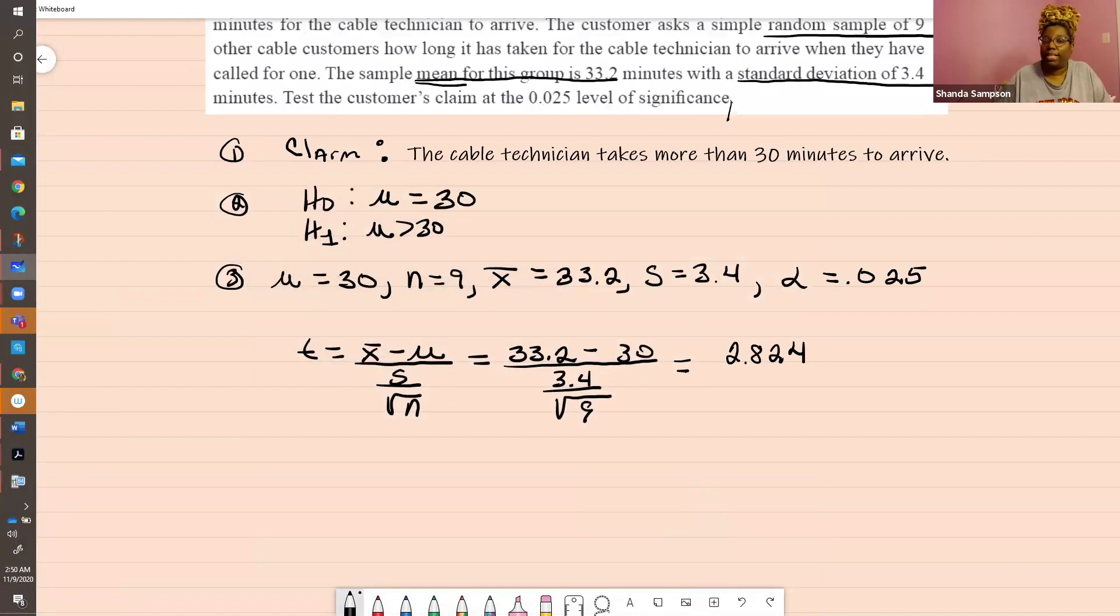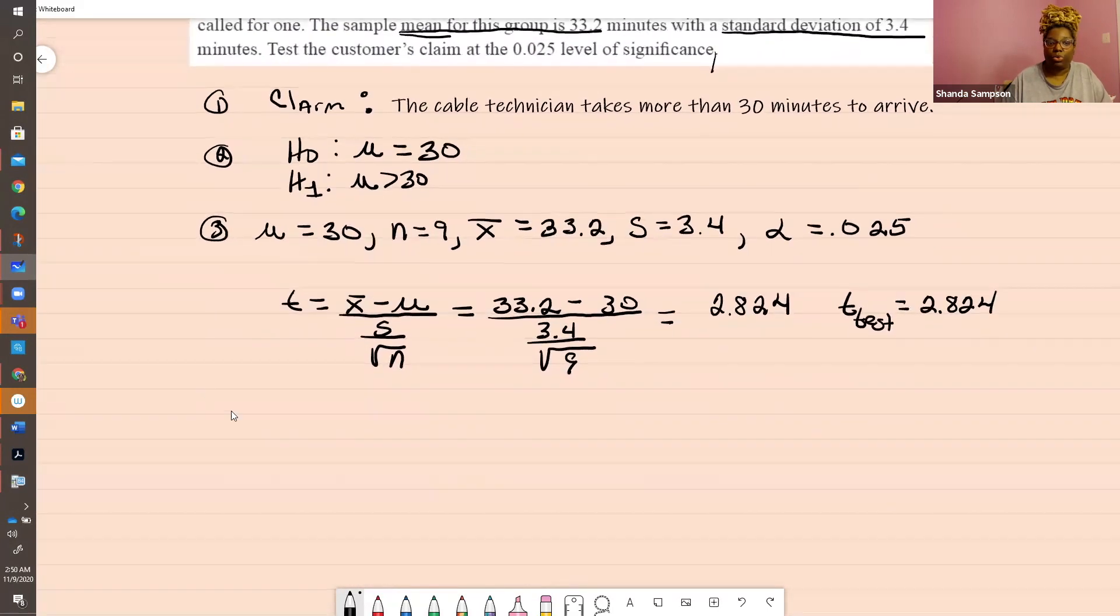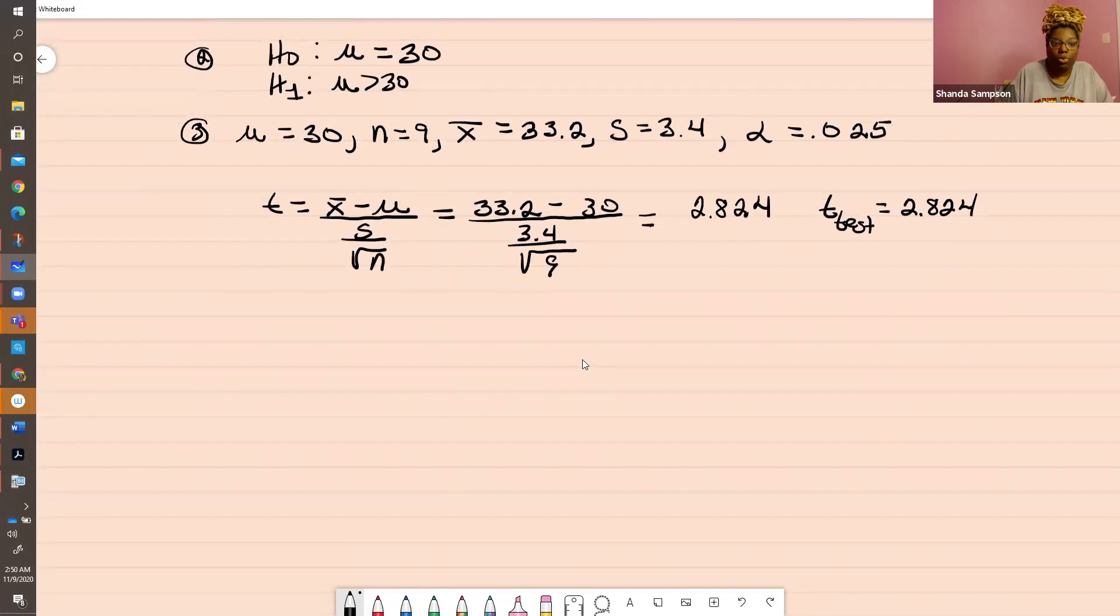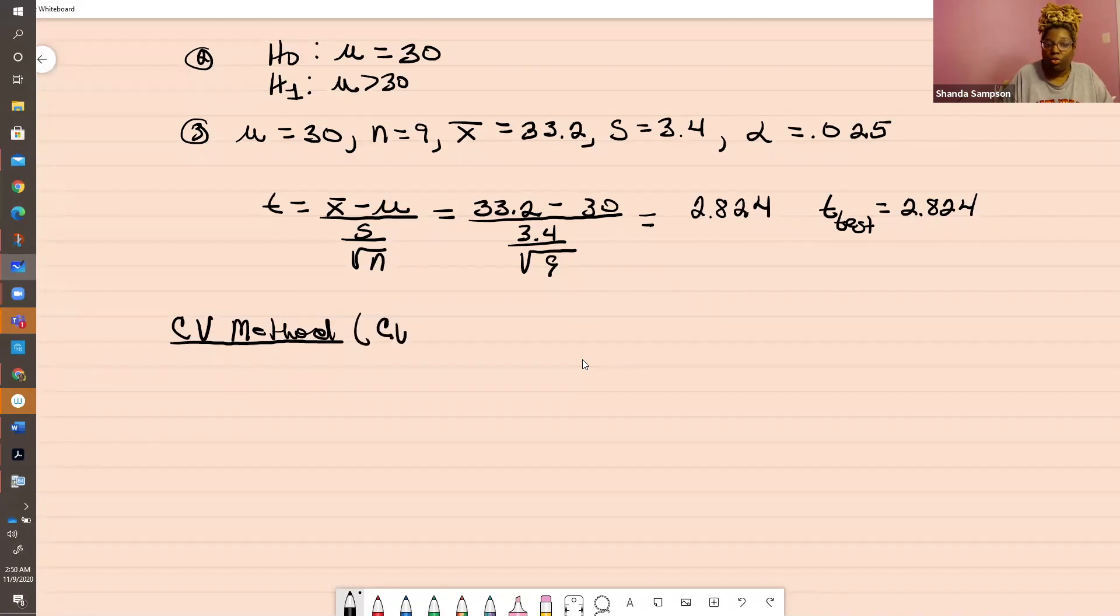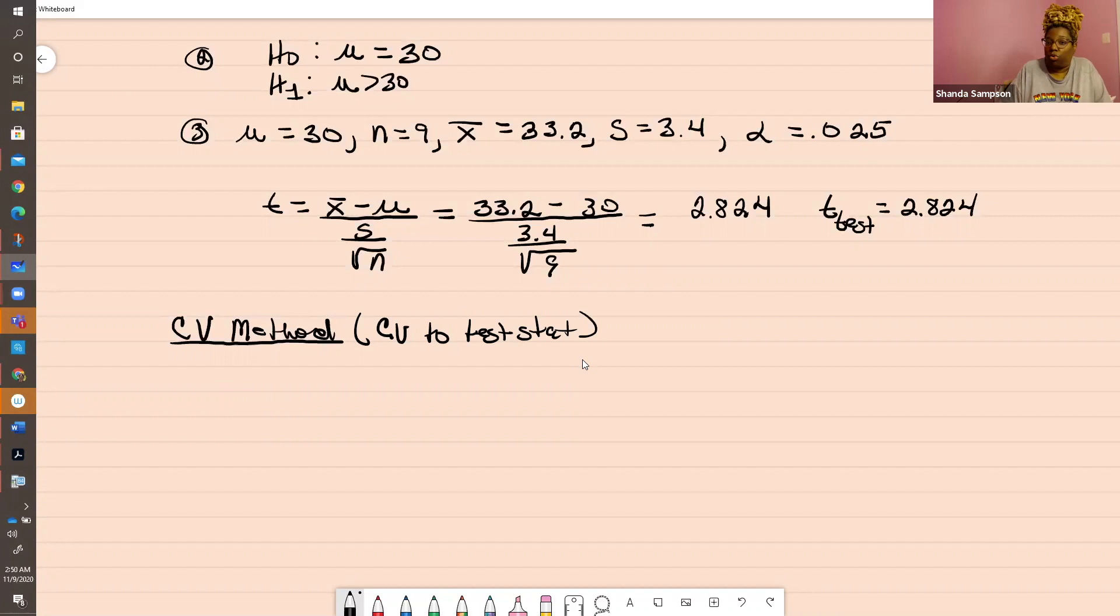I have you write T test. So this is your T test statistic because you're going to have two T's. You're going to have a T test and you're going to have a T critical value. Now we're going to determine which method we're going to use. The first method is going to be the critical value method. Critical values come from the chart. So you need a T critical value.